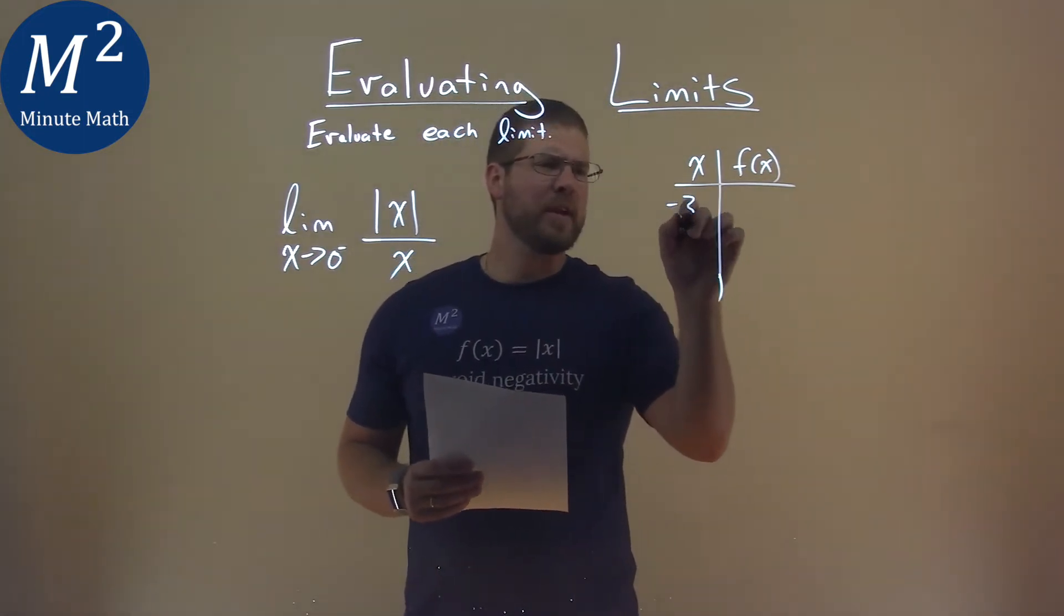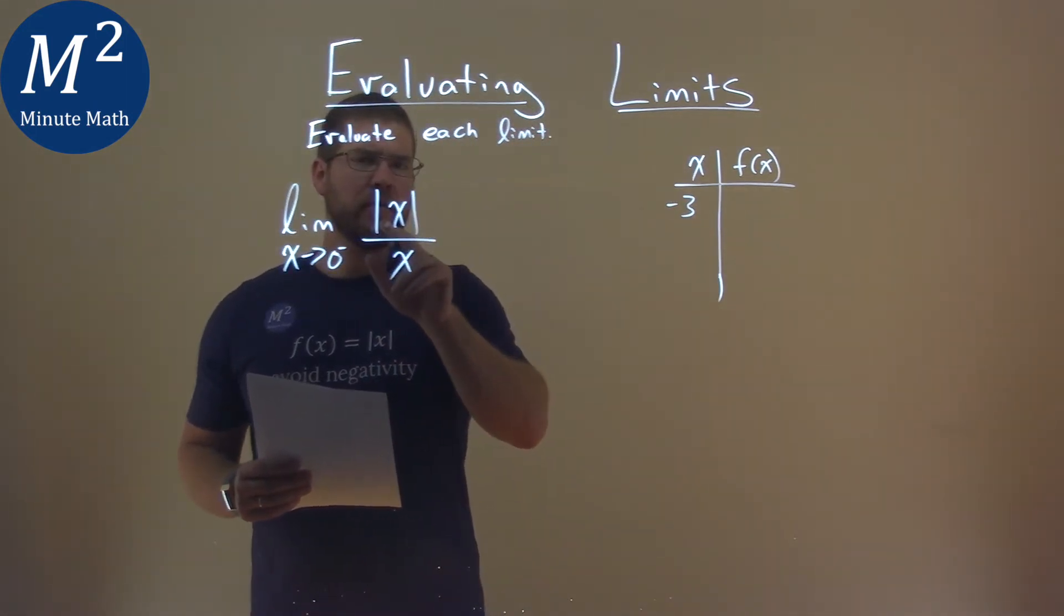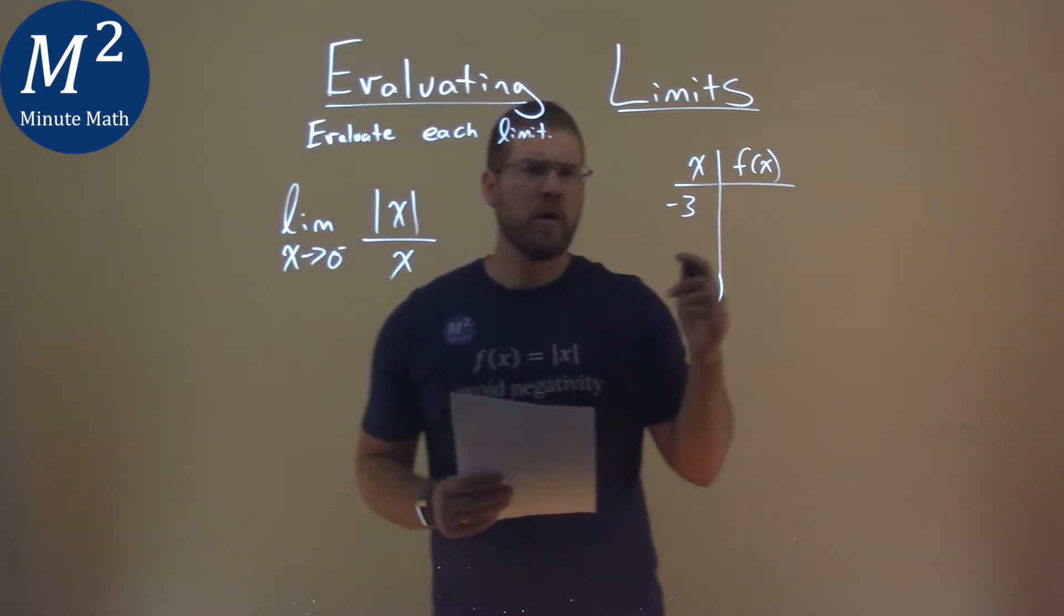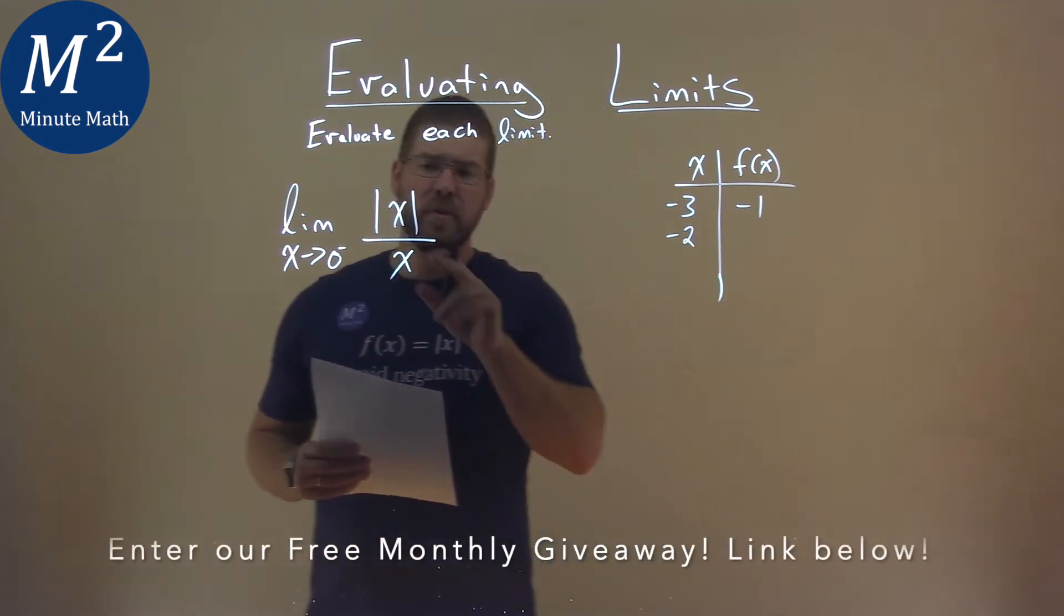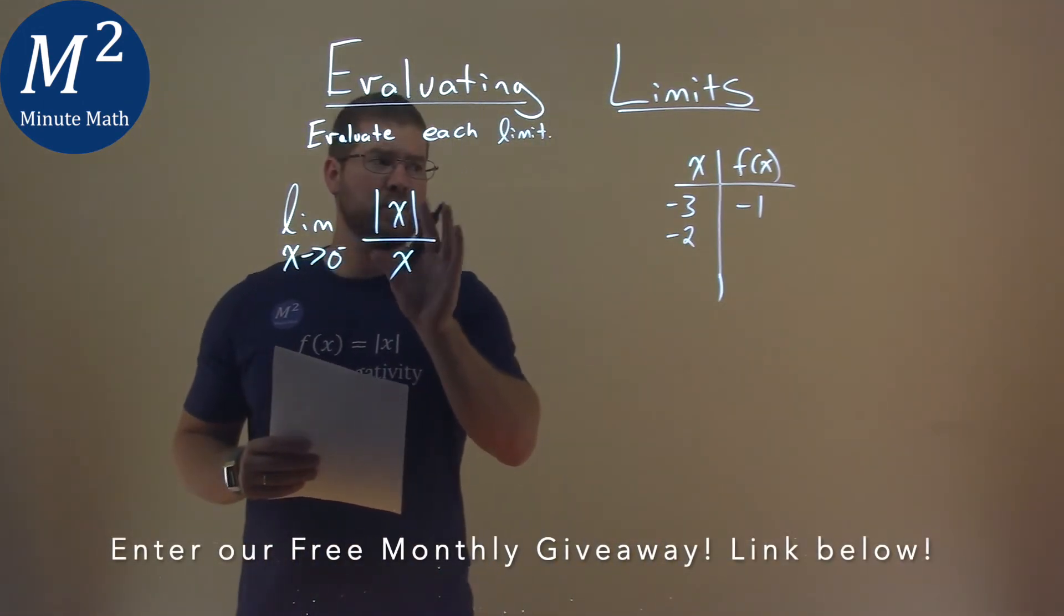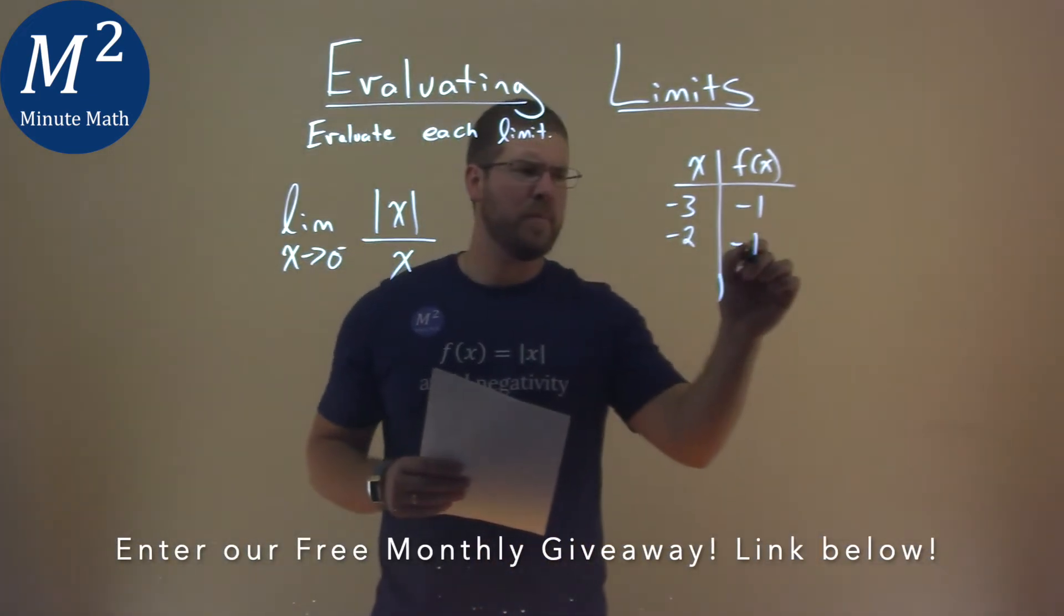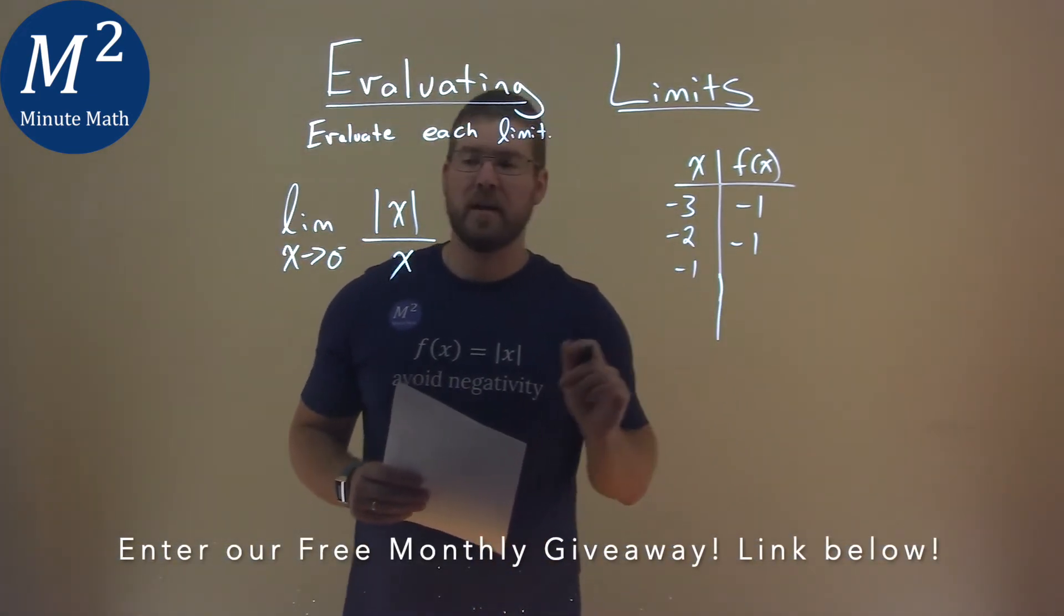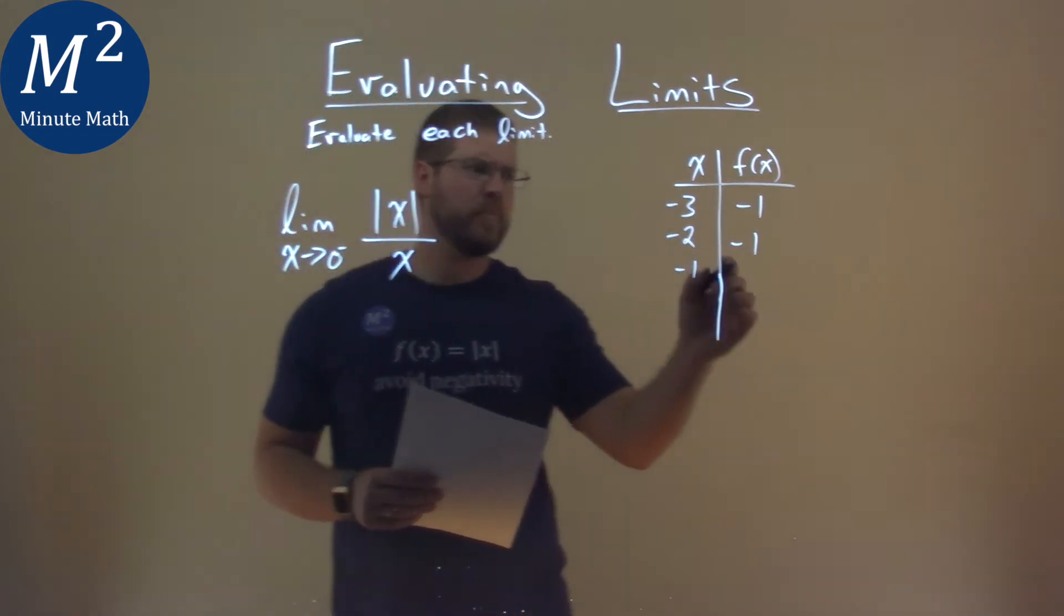If I put a negative 3 in for x, what happens? Well, the numerator here, negative 3 goes in, becomes a positive 3, right with the absolute value, but we're divided by negative 3, so the overall equation becomes a negative 1. If we plug negative 2 in, same thing, negative 2 in for x, absolute value makes a positive 2, dividing it by a negative 2, negative 1. We do the same thing with negative 1 up top, becomes a positive 1, divided by negative 1, negative 1.